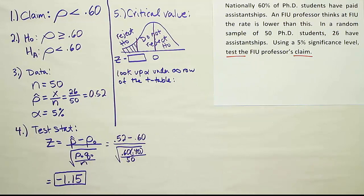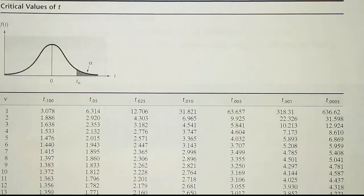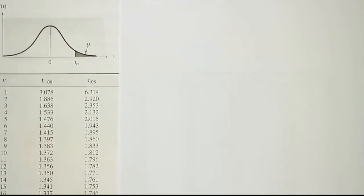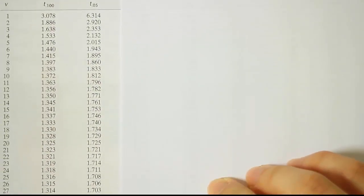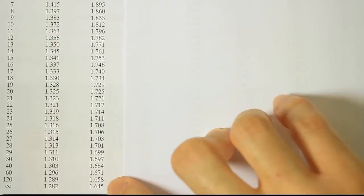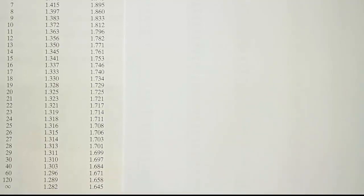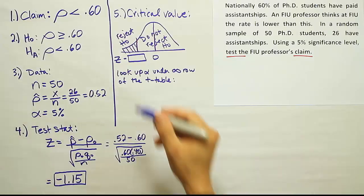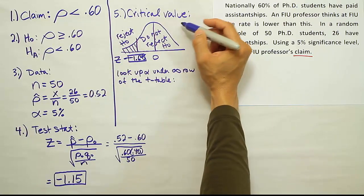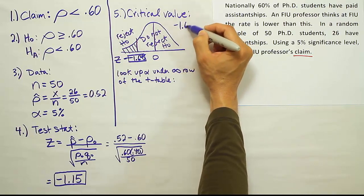So let's go do that and see what number we come up with. We're going to look up 5% under the infinity row of our T table. Let's see what our critical Z value is. So we're looking up alpha equals 0.05 on the T table. Scrolling all the way down until we see the last row, or infinity. We get the answer 1.645. So we get the value negative 1.645. So that's our critical value, negative 1.645.